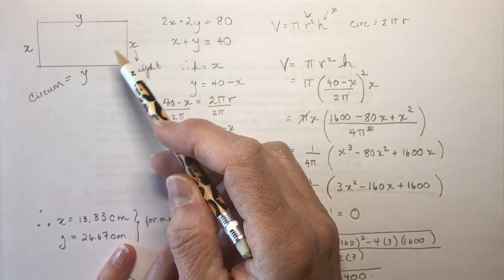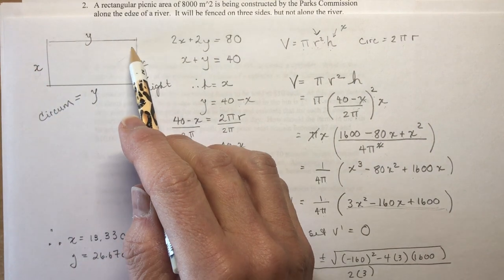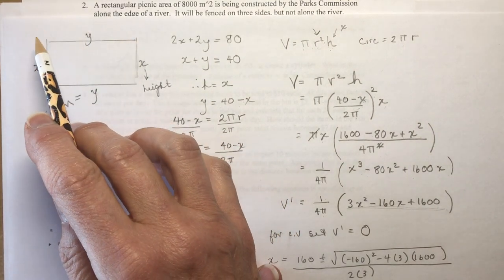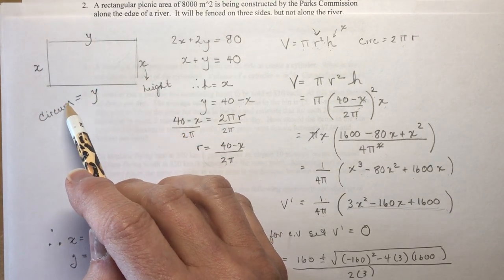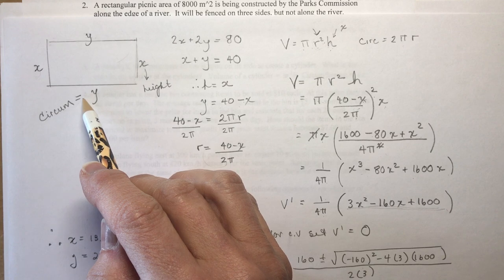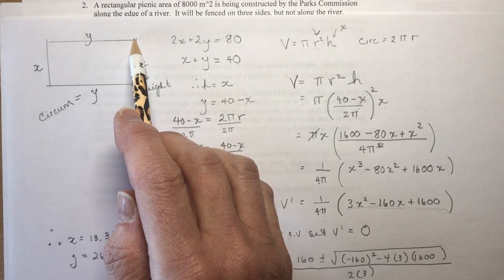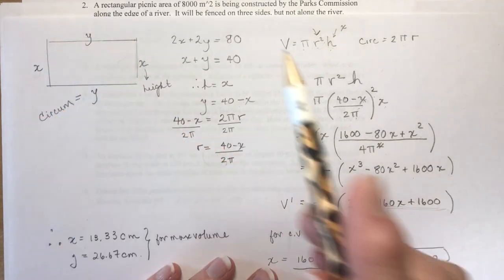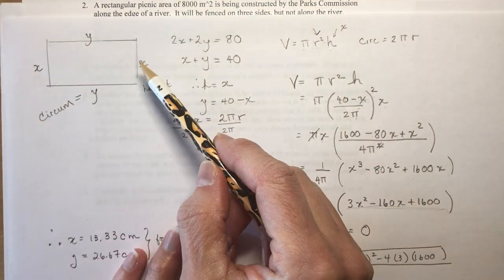The first thing I did was draw a diagram. Here's my diagram, I've got a rectangle. I'm going to spin this so that this part here gets rolled around. This part here, Y, is actually the circumference of my cylinder where X is going to be the height. You can see if I roll this over, put this side to here, this would be circumference and this would be the height.